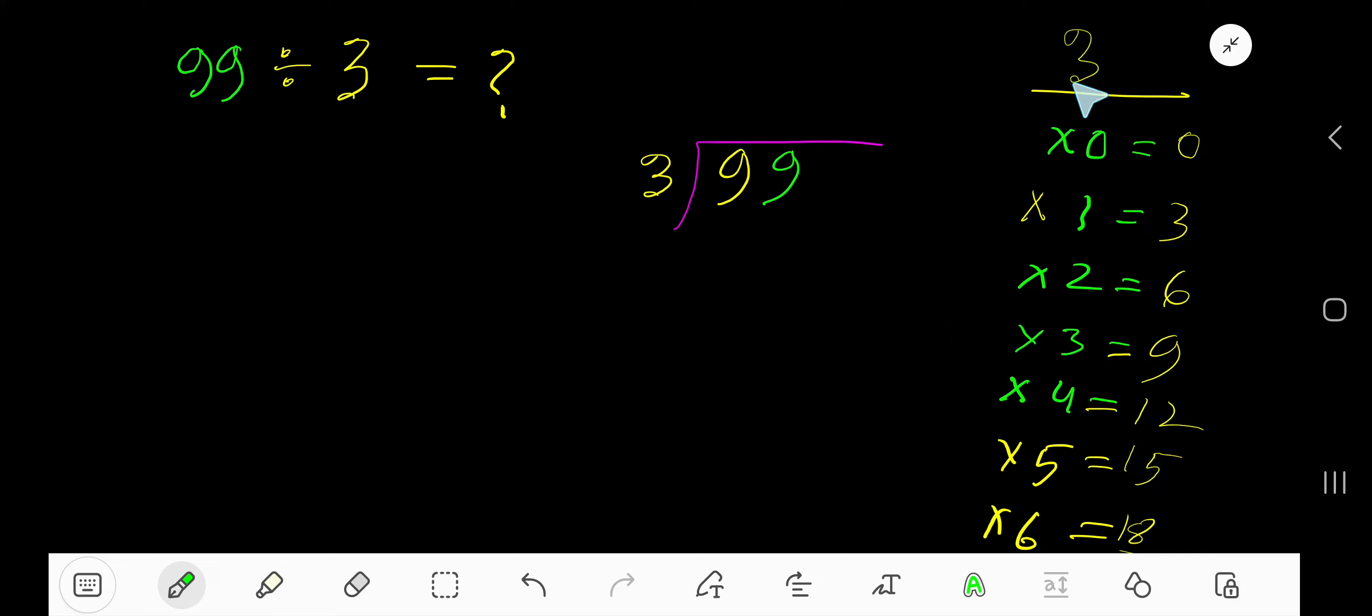To find out the multiplication table of 3 easily, just add 3 to the previous step. 0 plus 3 is 3. 3 plus 3 is 6. 6 plus 3 is 9.